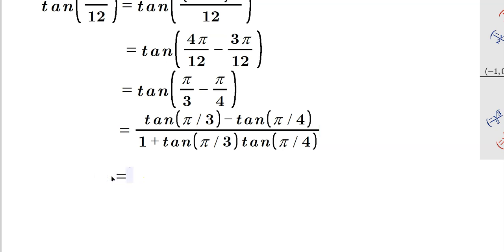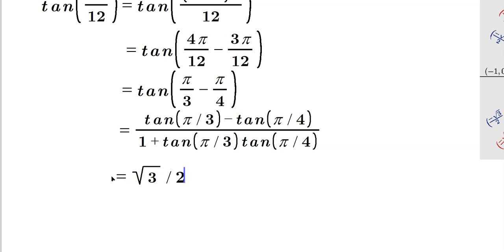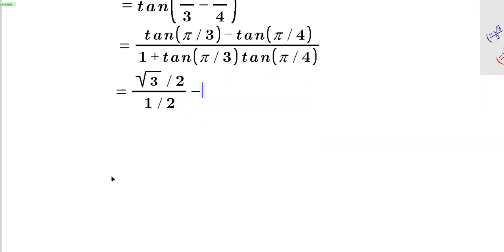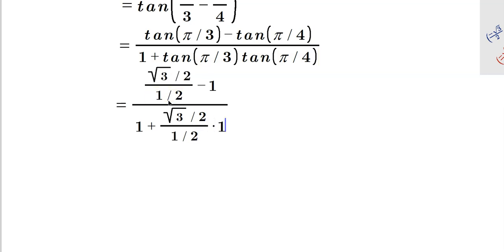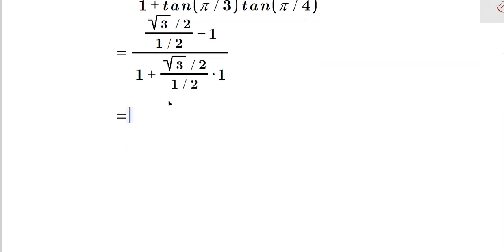The tangent of pi over 3 from the unit circle gives root 3 over 2 divided by 1 over 2. Minus the tangent of pi over 4, which from the unit circle is 1. In the bottom, you have 1 plus tangent of pi over 3 — that's root 3 over 2 divided by 1 half — multiplied by tangent of pi over 4, which is 1.